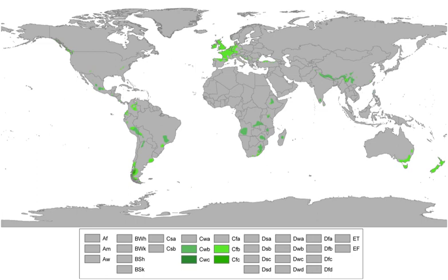The only noteworthy area of maritime climate at or near sea level within Africa is in South Africa from Mossel Bay on the western Cape coast to Plettenberg Bay, with additional pockets of this climate inland of the eastern Cape and KwaZulu-Natal coast. It is usually warm most of the year with no pronounced rainy season, but slightly more rain in autumn and spring. The Tristan da Cunha archipelago in the South Atlantic also has an oceanic climate.